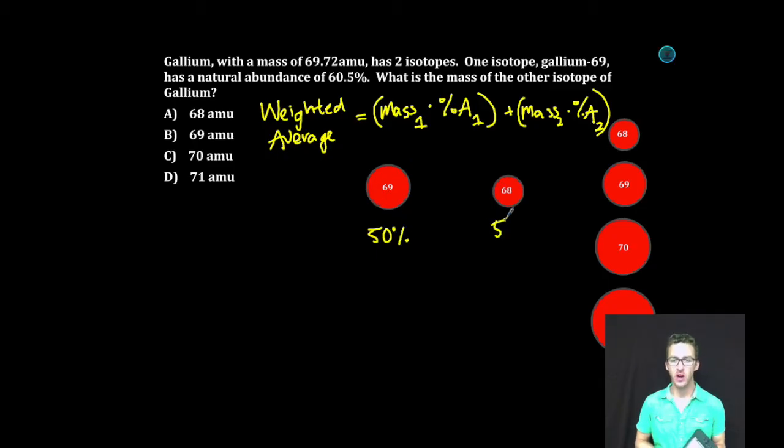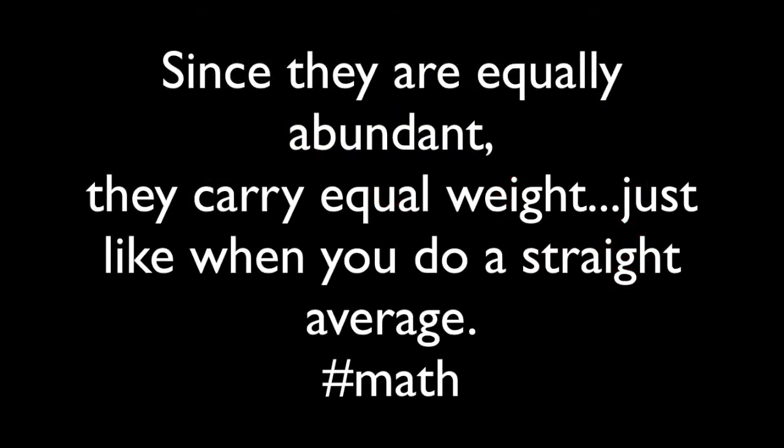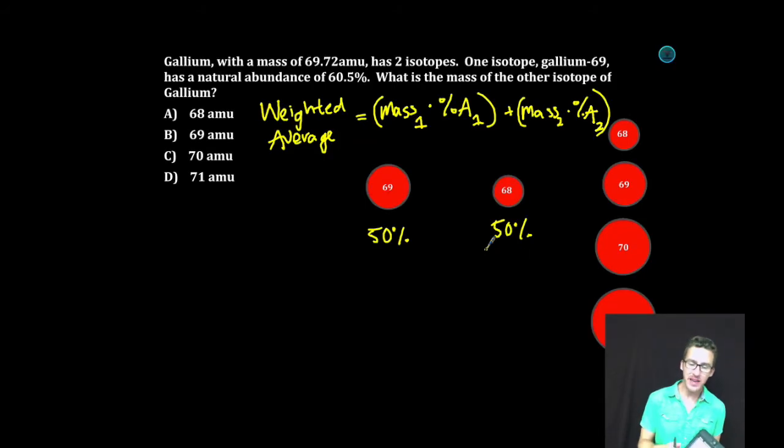So if half of my gallium had a mass of 69, the other had a mass of 68, my weighted average would fall exactly in between the two or 68.5. It's too low. So 68 is out.